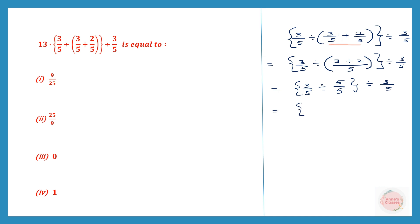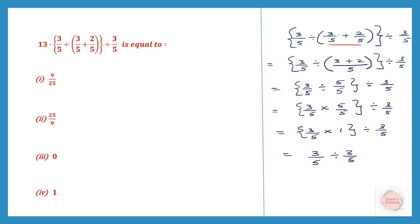Now 5/5 equals 1, so inside the curly brackets: 3/5 into 1 equals 3/5. Then 3/5 ÷ 3/5 — division changes to multiplication, 3/5 becomes 5/3. So 3 into 5 is 15 in the numerator, 5 into 3 is 15 in the denominator; 15/15 equals 1. The answer is 1, which is option 4.